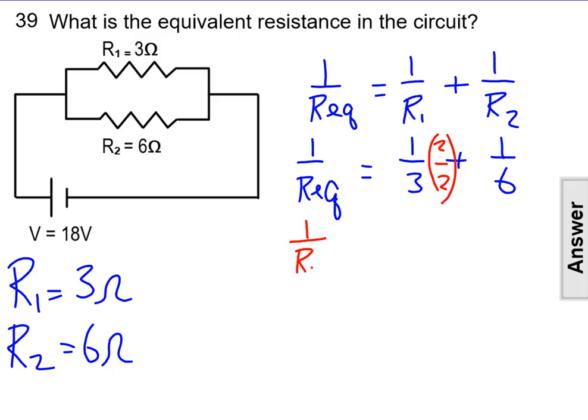Now we have 1 over the equivalent resistance equals 2 over 6 plus 1 over 6. 1 over REQ equals 3 over 6.